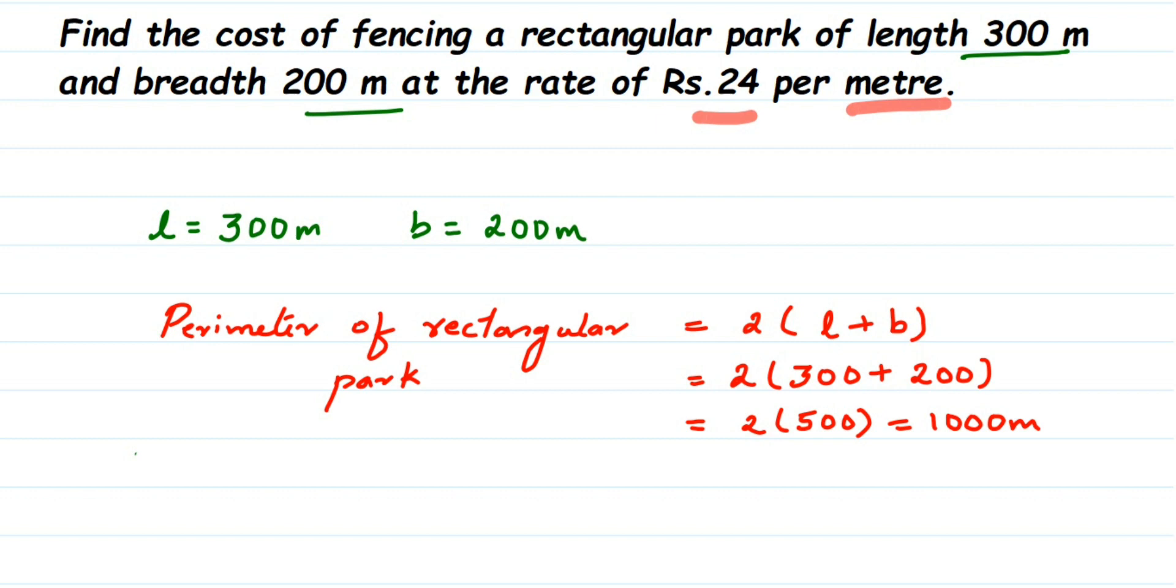Now we're going to find out the cost here. How much they are charging? They are charging per meter 24 rupees, which means for 1 meter they are charging rupees 24. So here we have 1000 meters, so it will be 1000 into 24.